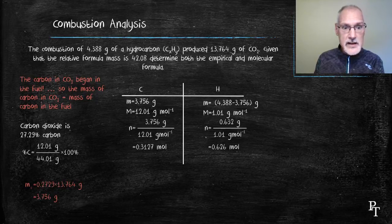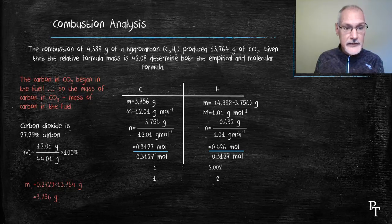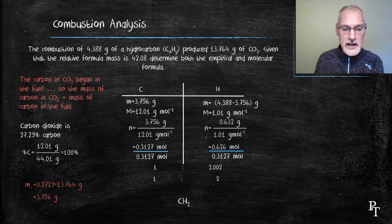As we do in these questions, we take the lowest of these two answers and divide it into both. That then gives me the ratio that exists between the two. In this case, 1 to 2. Hence, my hydrocarbon's empirical formula is CH2.